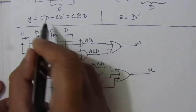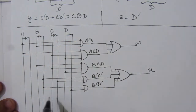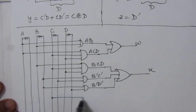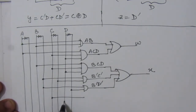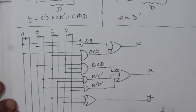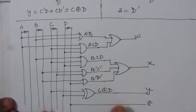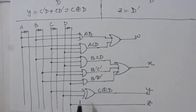For Y = C XOR D: take a line from C and a line from D into an XOR gate to get Y. For Z = D̄: directly take the line from D̄ to get Z. This completes the logic circuit diagram of the XS3 to BCD converter.